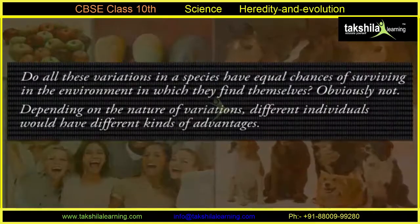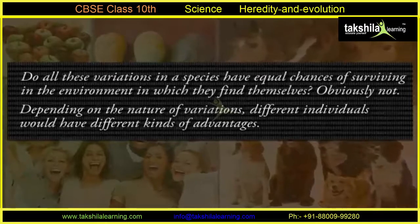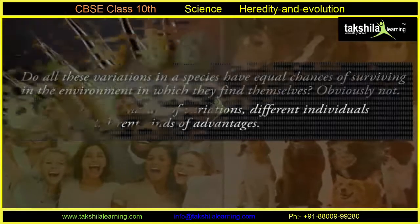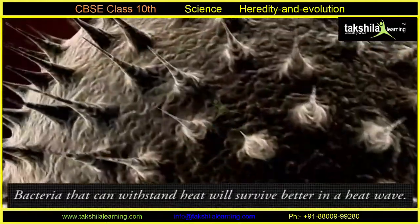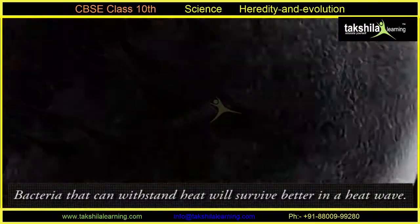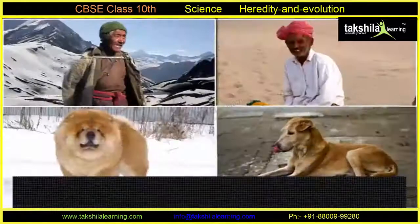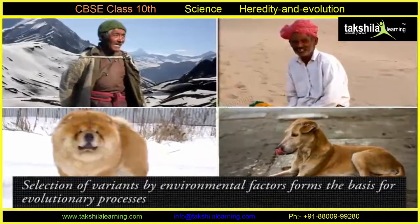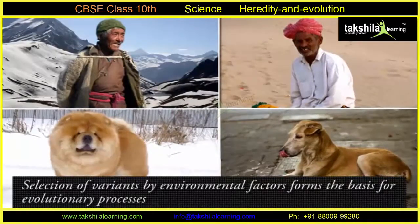Depending on the nature of variations, different individuals would have different kinds of advantages. Bacteria that can withstand heat will survive better in a heat wave, as we have discussed earlier. Selection of variants by environmental factors forms the basis for evolutionary processes, as we will discuss in later sections.